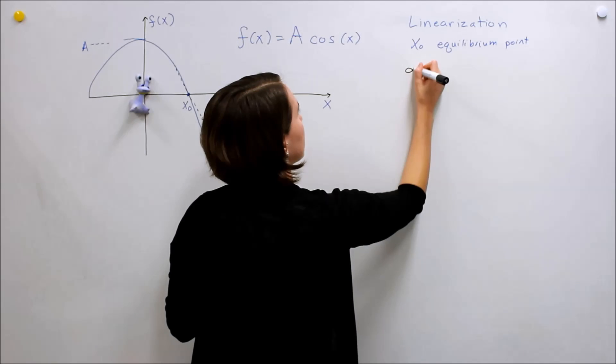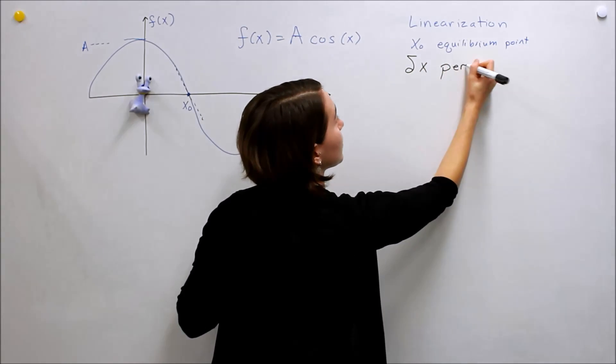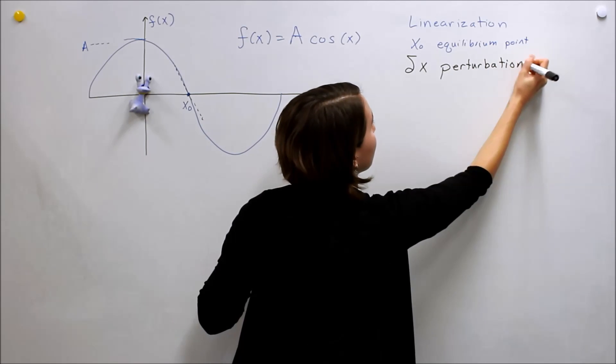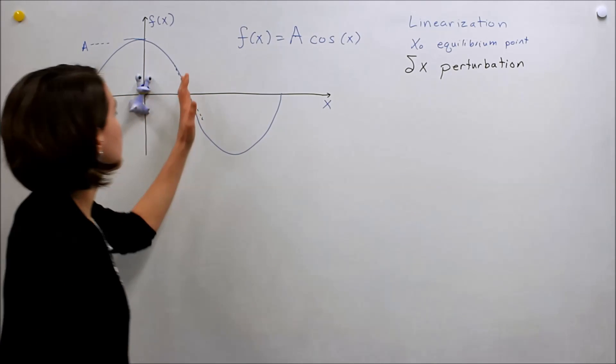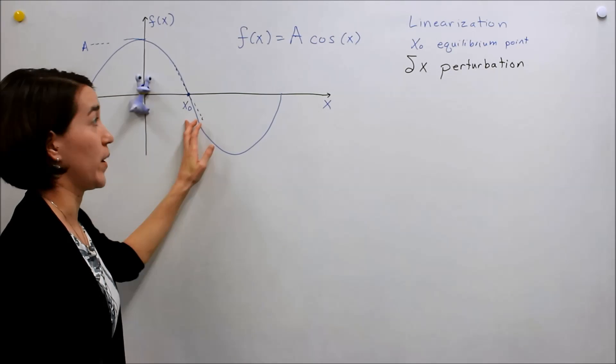We're going to introduce δx, and this will be our perturbation variable or signal. So this is just little perturbations around x₀, our equilibrium point.